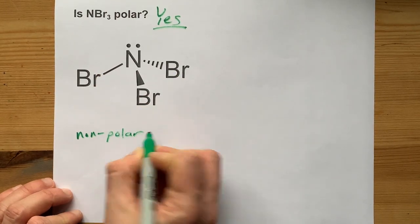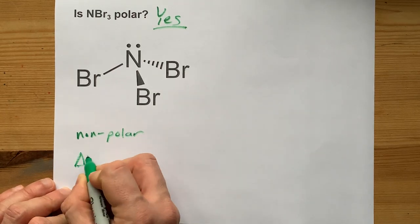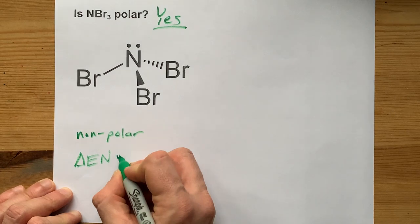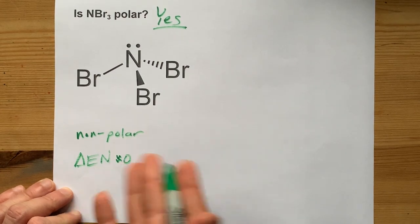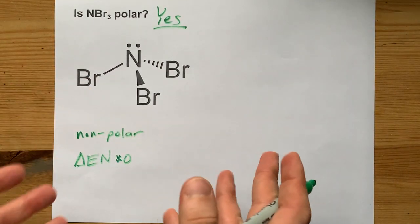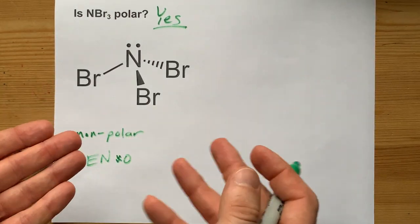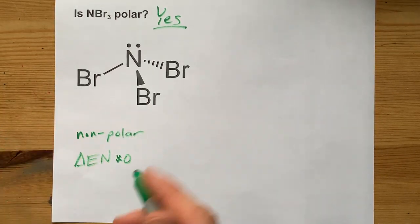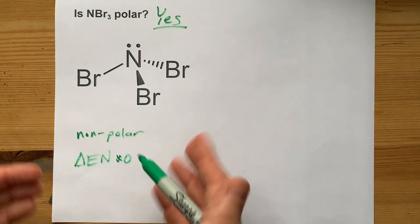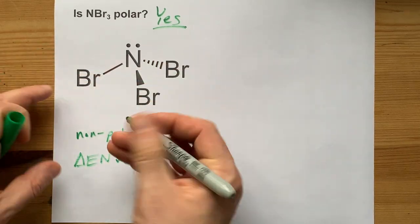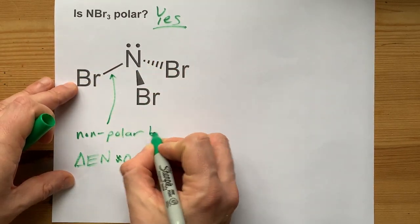Now, when I say that, I mean the difference in electronegativity between nitrogen and bromine is about zero. It depends on the periodic table that you're looking up electronegativities on. Sometimes it's 0.1, which is small. Sometimes it's actually exactly zero. A difference in electronegativity of about zero means that each of those bonds are non-polar.